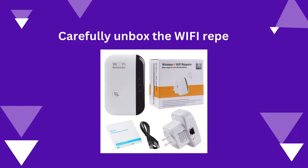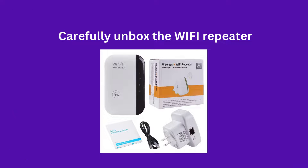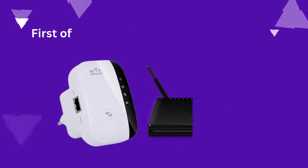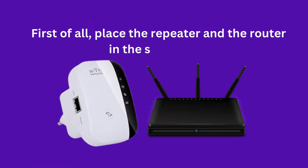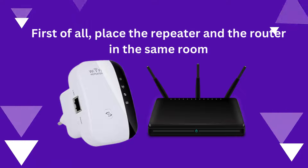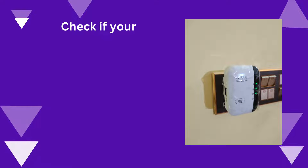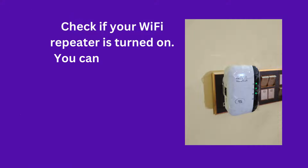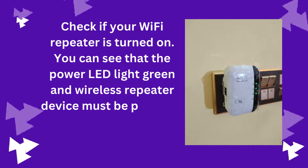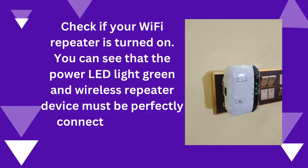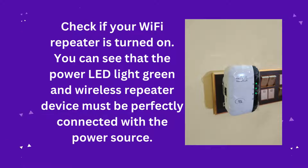Carefully unbox the Wi-Fi Repeater. First of all, place the repeater and the router in the same room. Check if your Wi-Fi Repeater is turned on — you can see that the Power LED light is green, and the wireless repeater device must be perfectly connected with the power source.